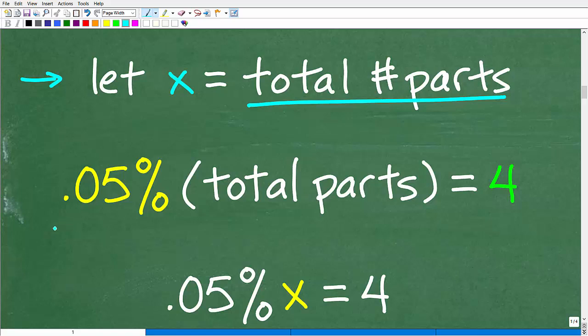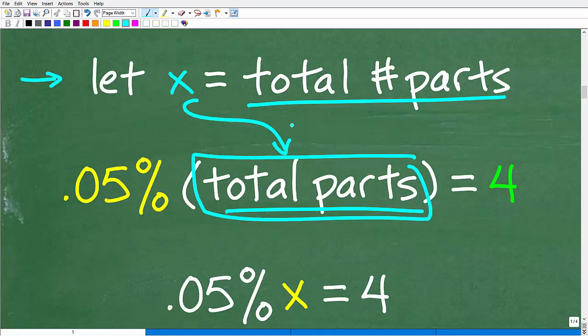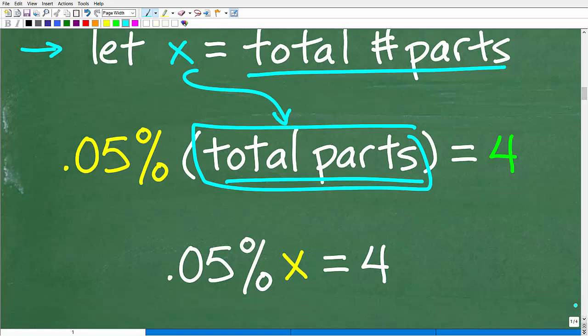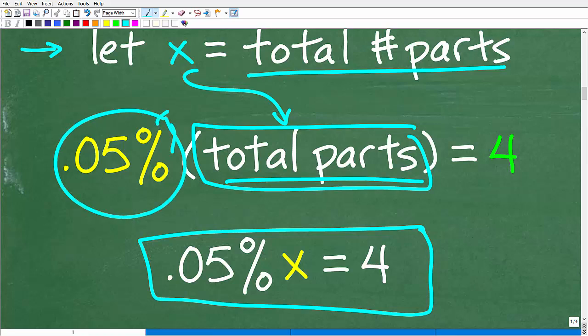We're going to let x equal the total number of parts that Jay examined. So, instead of 0.05% of the total number of parts, we're going to replace this total parts with the variable x. So, we're going to end up with this equation right here. 0.05% of x is equal to 4. Effectively, we're going to be finding the percent of a number. 0.05% of this one number, whatever it is, is 4.